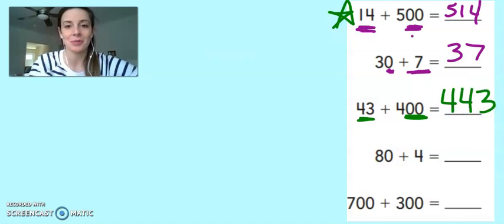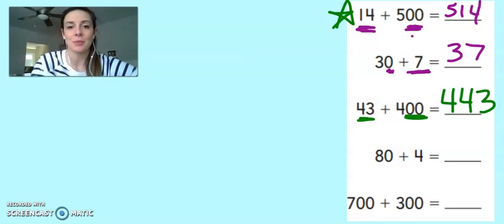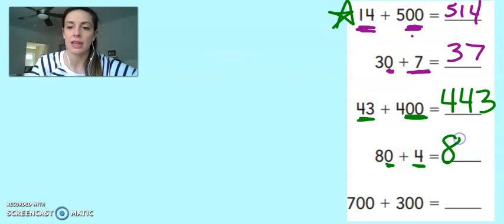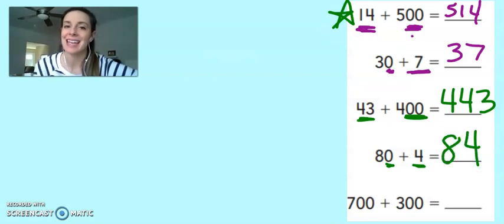Two more examples to go. The next example is 80 plus 4. Now 4 is in my ones place, so I'm going to look at the ones place on 80, and it's a zero. So I have 4 ones plus 0 ones. I think that's 4 ones. So 80 plus 4 is 84.